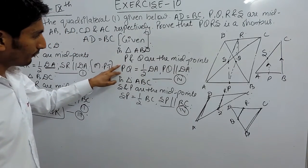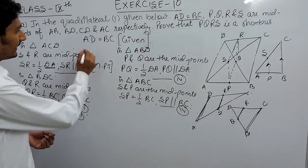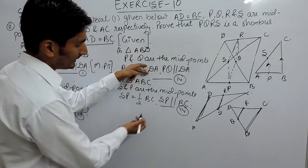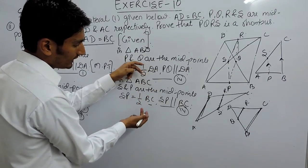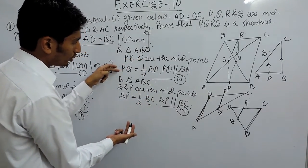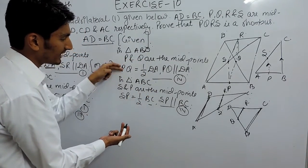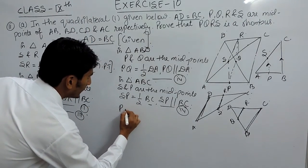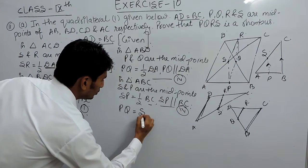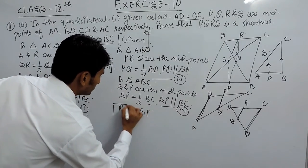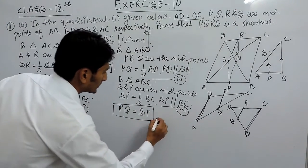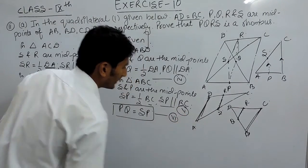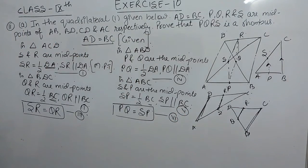Now, comparing the fourth and fifth equations — AD equals BC is given, so this AD and BC are equal. Clearly the right-hand sides are equal, so the left-hand sides must also be equal. Comparing equations four and five, I can conclude that PQ equals SP. This is our sixth equation.